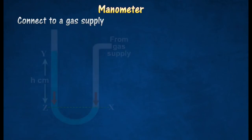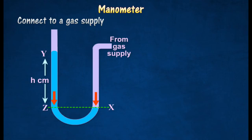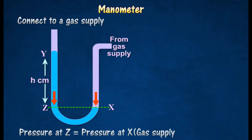When one arm is connected to a gas supply, the gas exerts a pressure on the surface X. The level Y is pushed up until the pressure at Z, which is at the same level as X, becomes equal to the gas pressure.